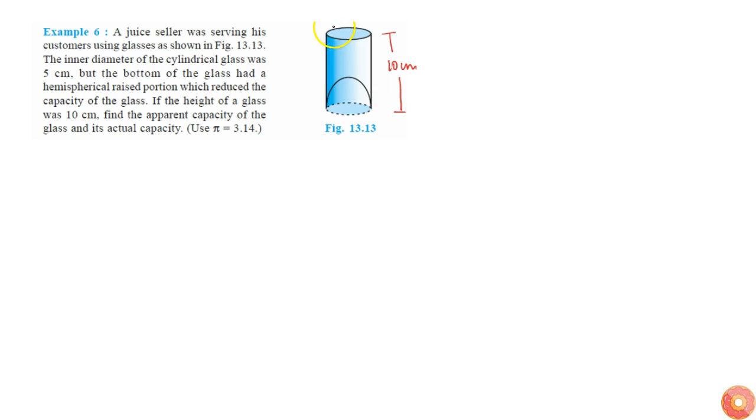The cylindrical glass diameter is 5 centimeters. We are asked to find the apparent capacity of the glass and its actual capacity. Apparent capacity is the one where people won't be knowing anything about this hemispherical extra volume addition in the glass. So without knowing that, the apparent capacity will be just the volume of the cylinder.